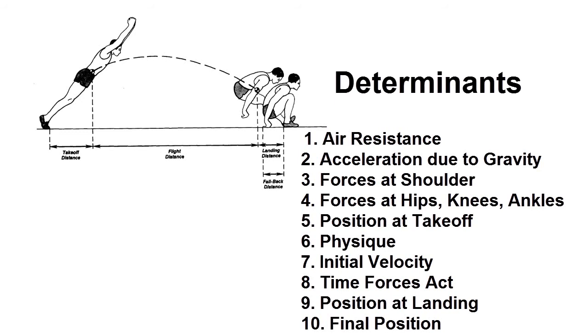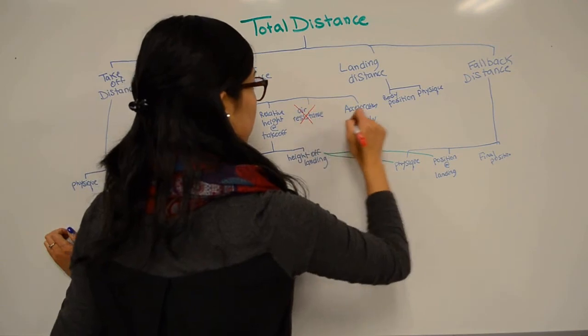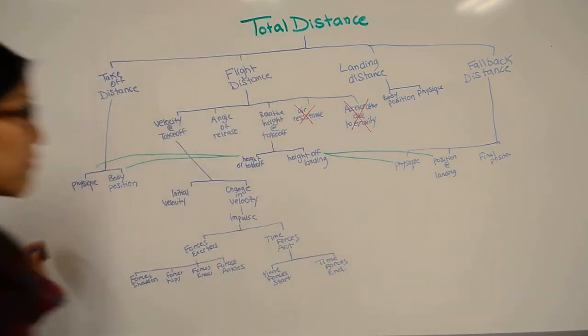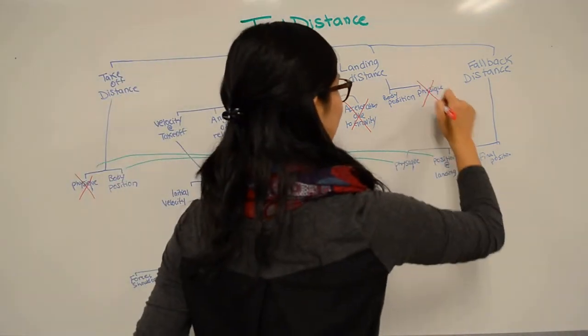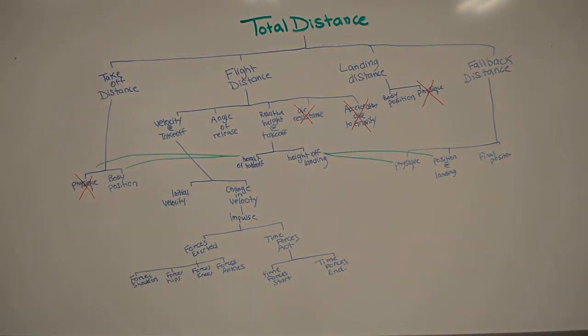We can go back to the flow diagram and cross off any of the factors that can't be readily changed. We can cross off air resistance and acceleration due to gravity because these are not factors that we can easily modify. And we can cross physique off because even though we can change this with training, it won't assist us in deciding upon correct form immediately.